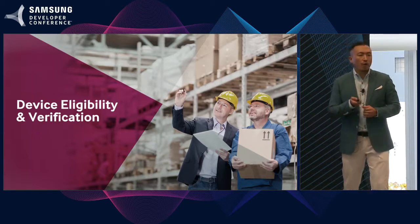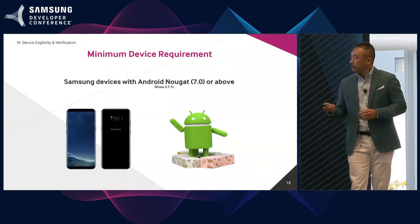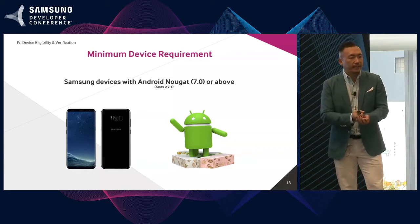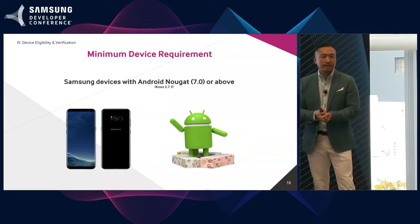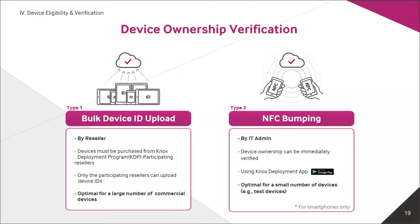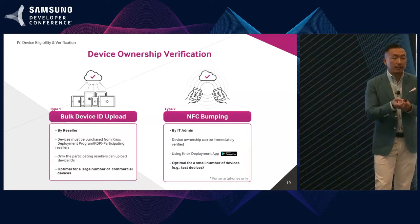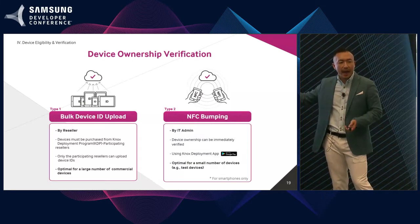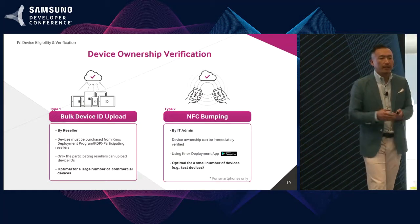Before going for actual commercial deployment, you need to ensure device eligibility and the verification process. You will need to make sure your device has Android OS Nougat 7.0 or higher to be compatible with Knox Configure. You will also need to contact a Knox Deployment Program participating device reseller, which is AT&T and Verizon in this country. Or, if you don't have a specific connection with AT&T and Verizon, you can use any device but will need to use the NFC app, which you can download from Google Play, to verify the device for using Knox Configure.